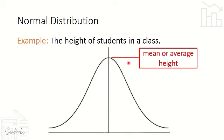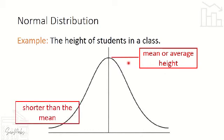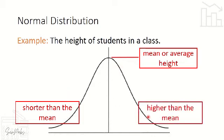So kalahati ng distribution is lower than the mean, and kalahati is higher. Halimbawa, ang mean value natin is 5'4 — that is the average height ng ating mga estudyante. So yung kalahati ng klase is less than 5'4, then yung kalahati is higher than 5'4. That is how normal distribution represents the probability of the given variable.